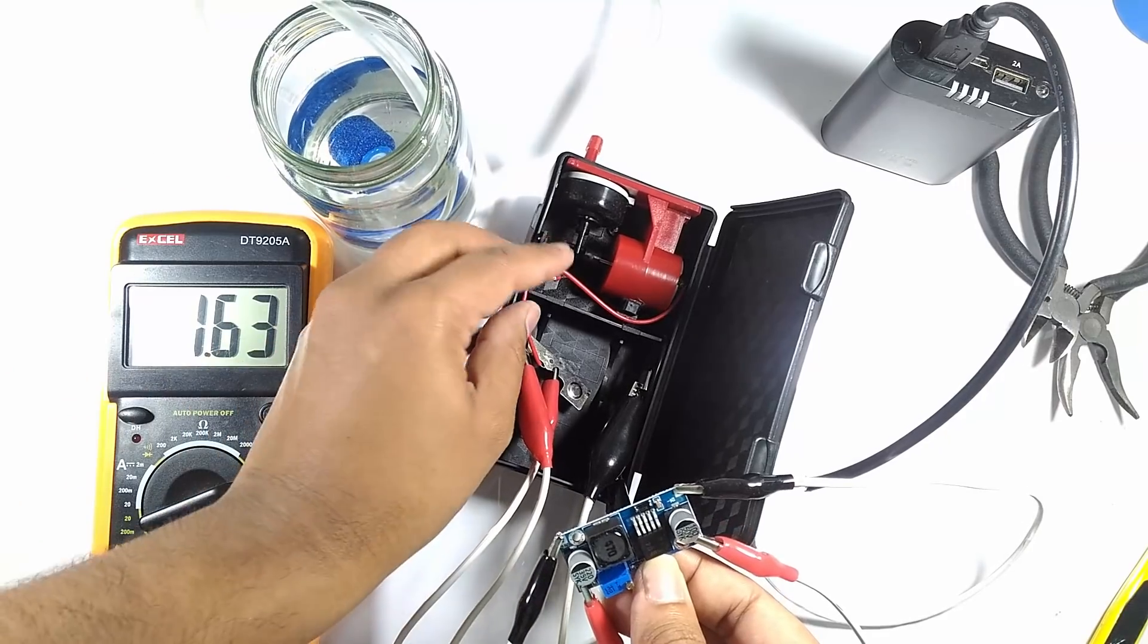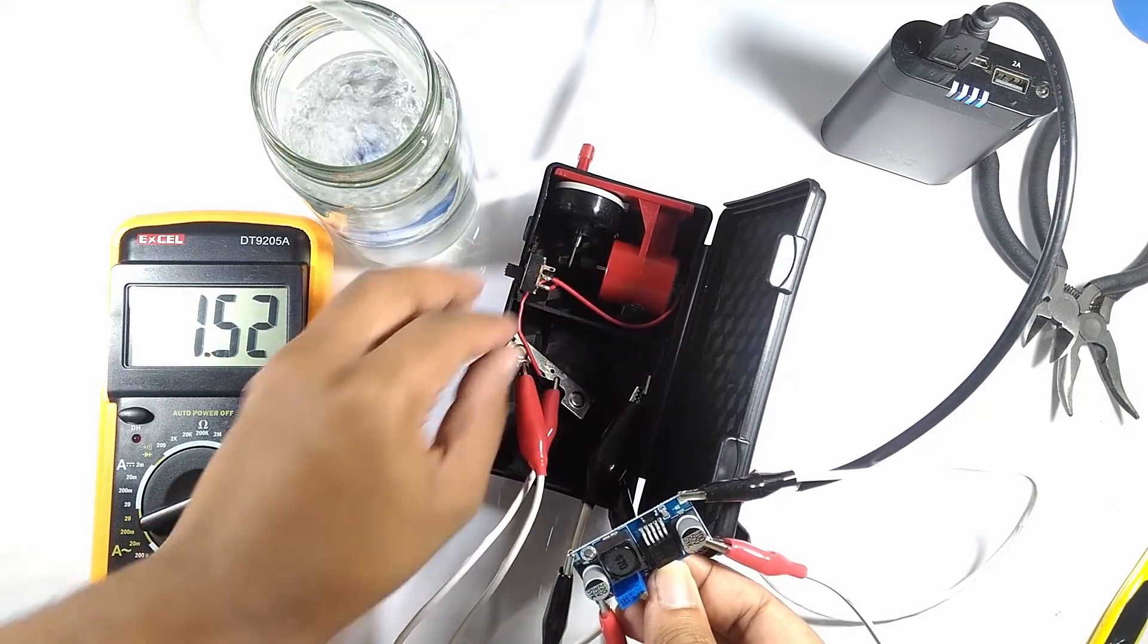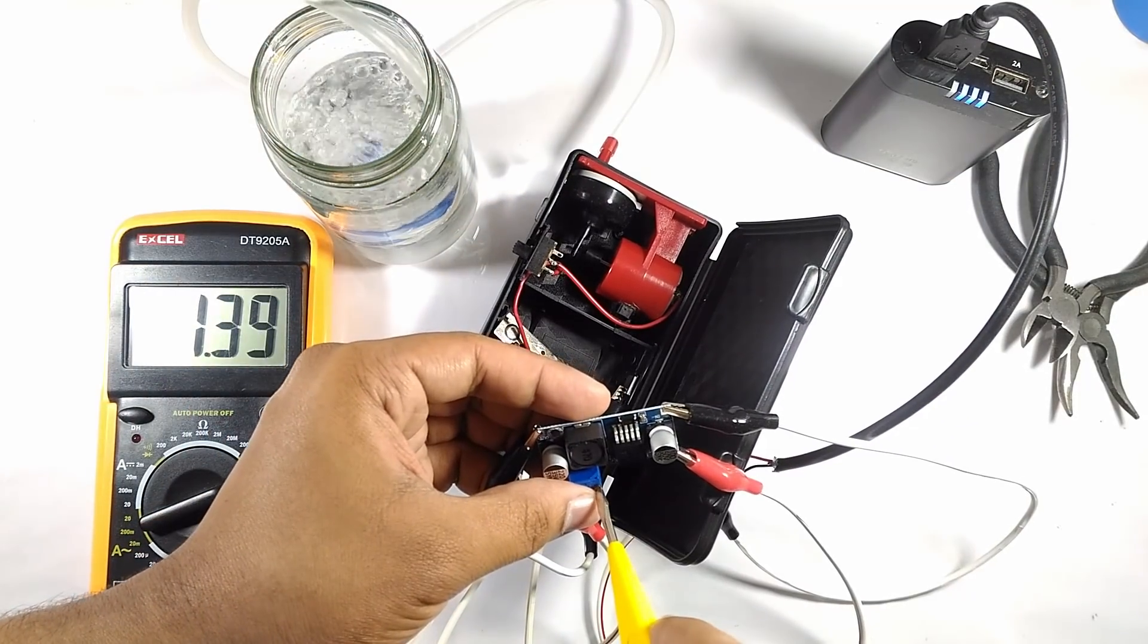If you would like to speed up the pump, you can slowly turn the potentiometer clockwise to increase the voltage by a small amount.